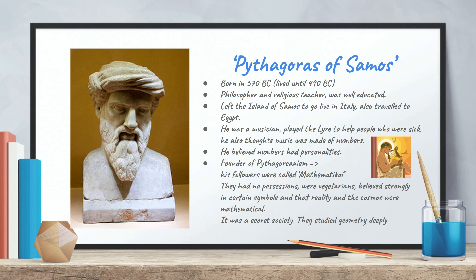So his followers were called Mathematicoi, and they had no possessions. They were vegetarians and strongly believed in certain symbols and that the reality and the cosmos were mathematical, so that the universe was made of numbers. They had a very strong interest in astrology and astronomy as well. It was a secret society, which is why there's not many accounts of Mr. Pythagoras himself based on his own writings, but mostly it was passed on from generation to generation and from word of mouth. So his students are the people who recollected what he came up with.